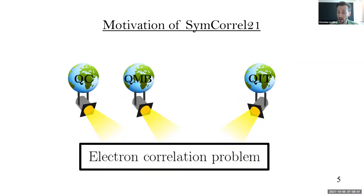In summary, the ultimate motivation is to shed light on the electron correlation problem from different perspectives, namely from quantum chemistry, but also from quantum many-body physics in the sense of solid state physics and condensed matter physics, and then from a rather fresh new perspective from quantum information sciences.